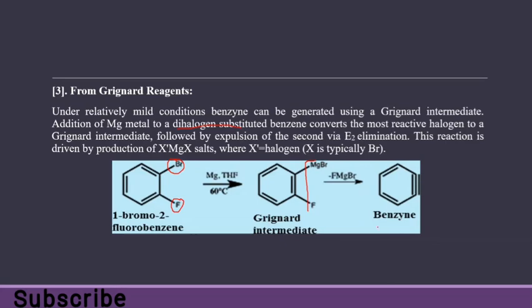Upon relatively mild conditions, benzyne can be generated using a Grignard reagent by addition of magnesium metal to a dihalogen-substituted benzene with bromine and fluorine groups. This converts the most reactive halogen, bromine, to a Grignard intermediate, followed by E2 elimination of the second halogen, fluorine. The reaction is driven by production of XMgX salt, where X is bromine.